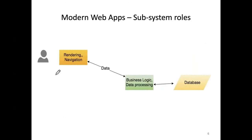In terms of the roles of the subsystems: the browser in this architecture is responsible for rendering — actually generating what the user sees on the screen, which means it generates the HTML. It is also responsible for handling navigation, changing the URL address in sync with the user clicking a link to display a new page. The web API server is concerned with implementing business logic — algorithms, computation, data processing — and communicating with the database.